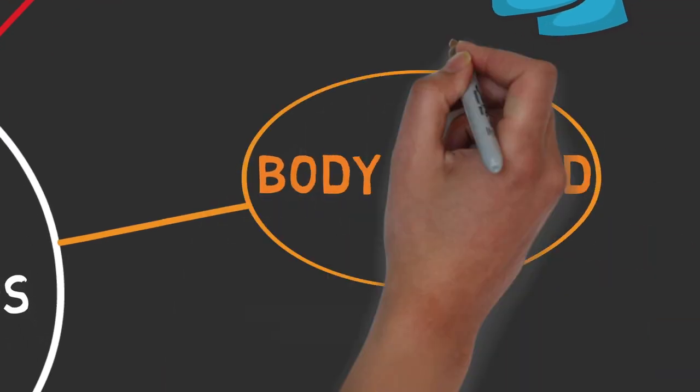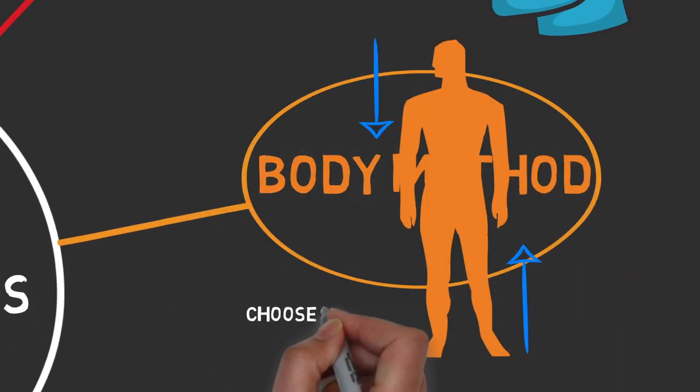For the body method, instead of a car, replace it with your body. You can start at your toes and move your way up or vice versa.